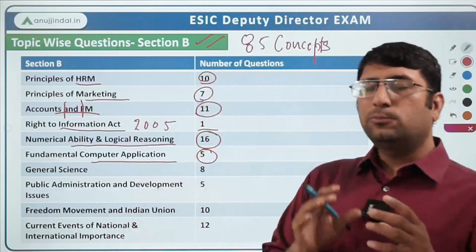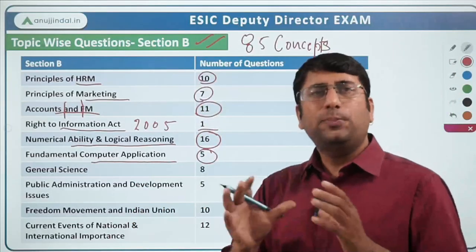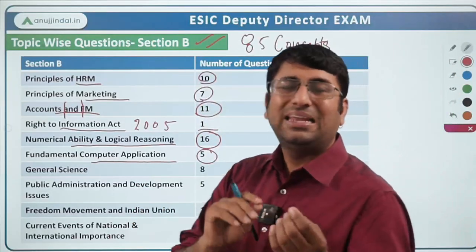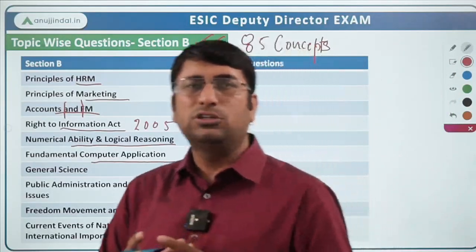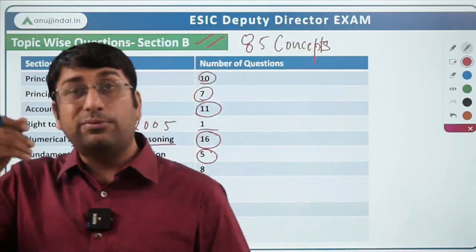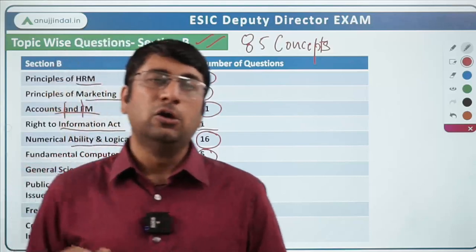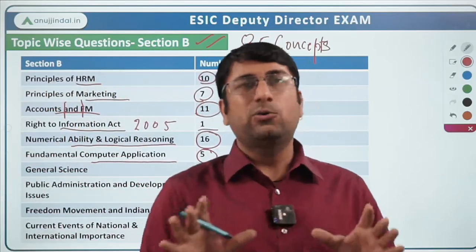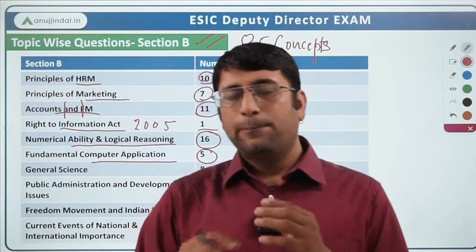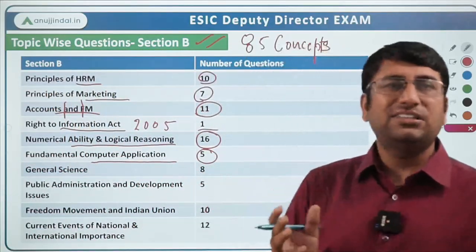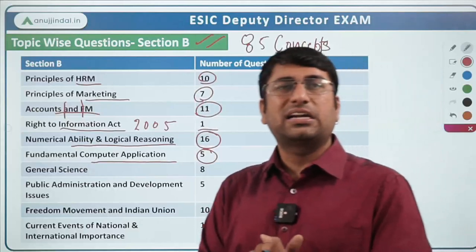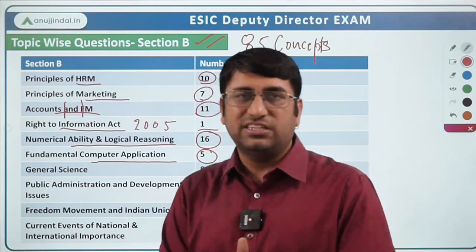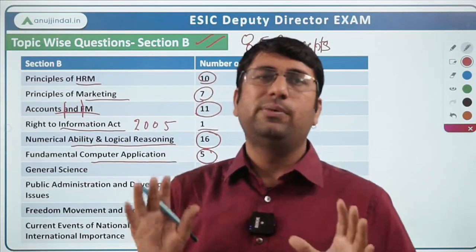Basic level means types of computers, RAM, ROM, software, hardware, keyboard, internal and external devices — basically what you studied in computers in 11th standard or even earlier. Five questions were asked. Basic general awareness about computer applications should be sufficient.